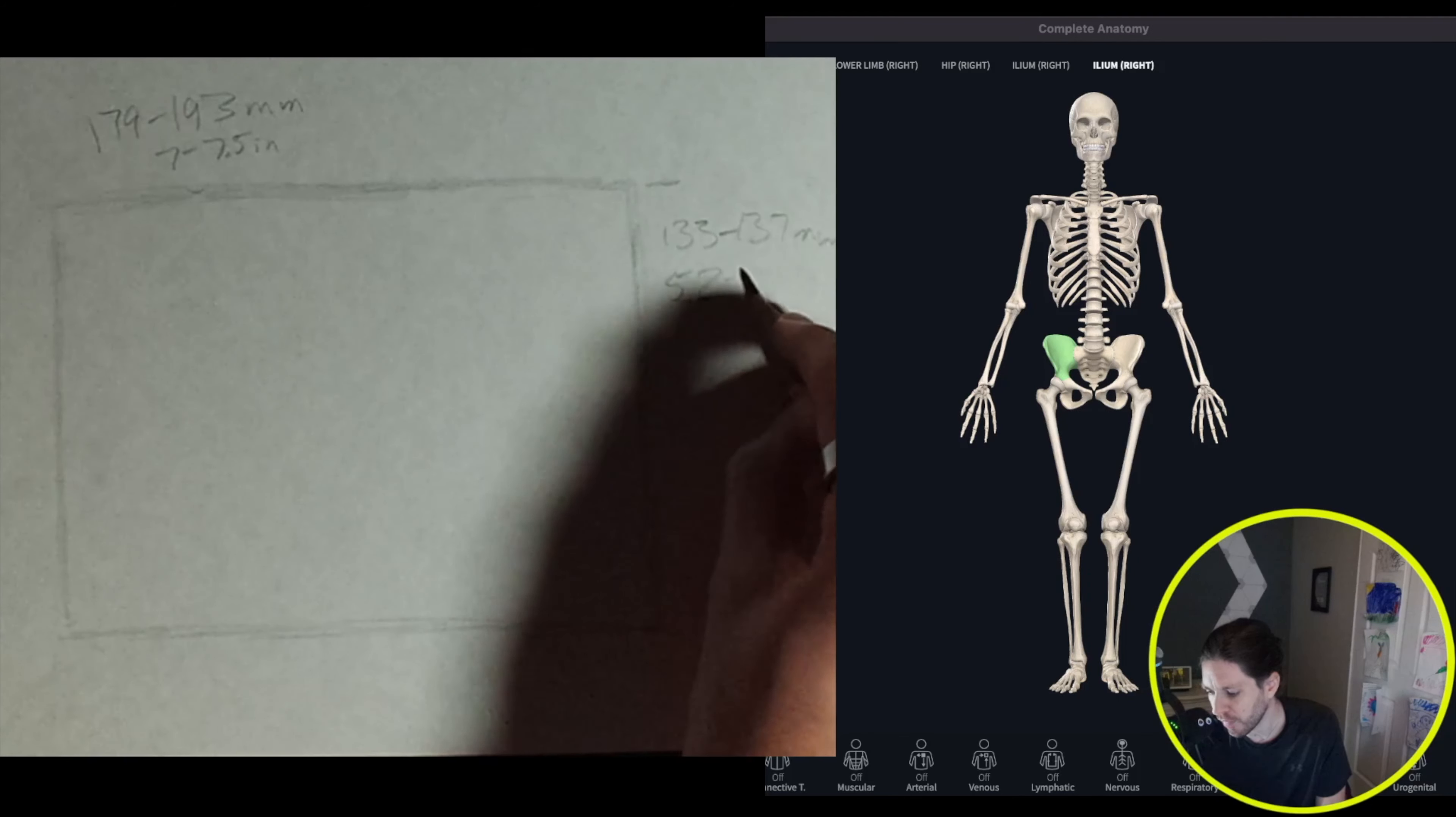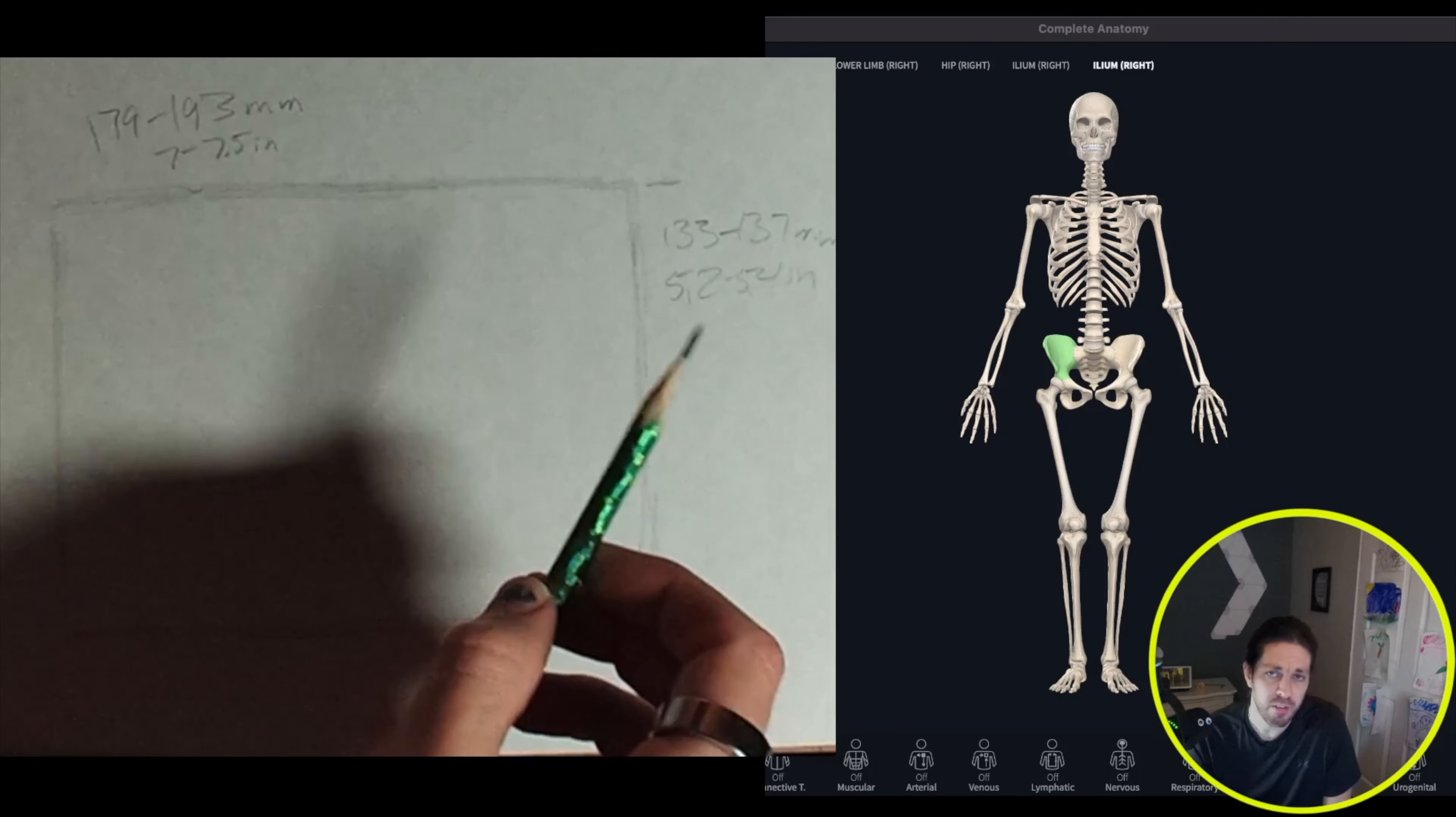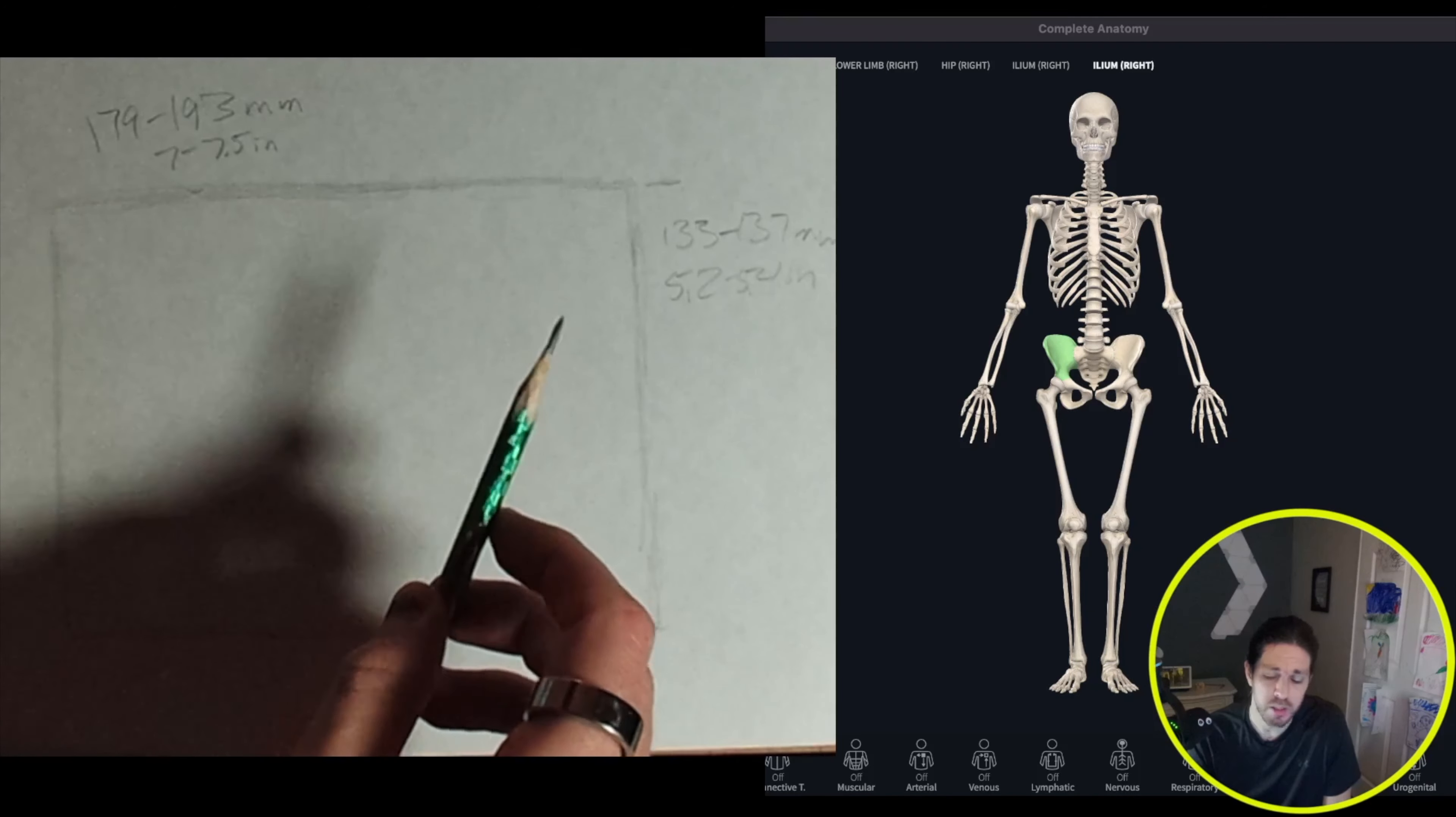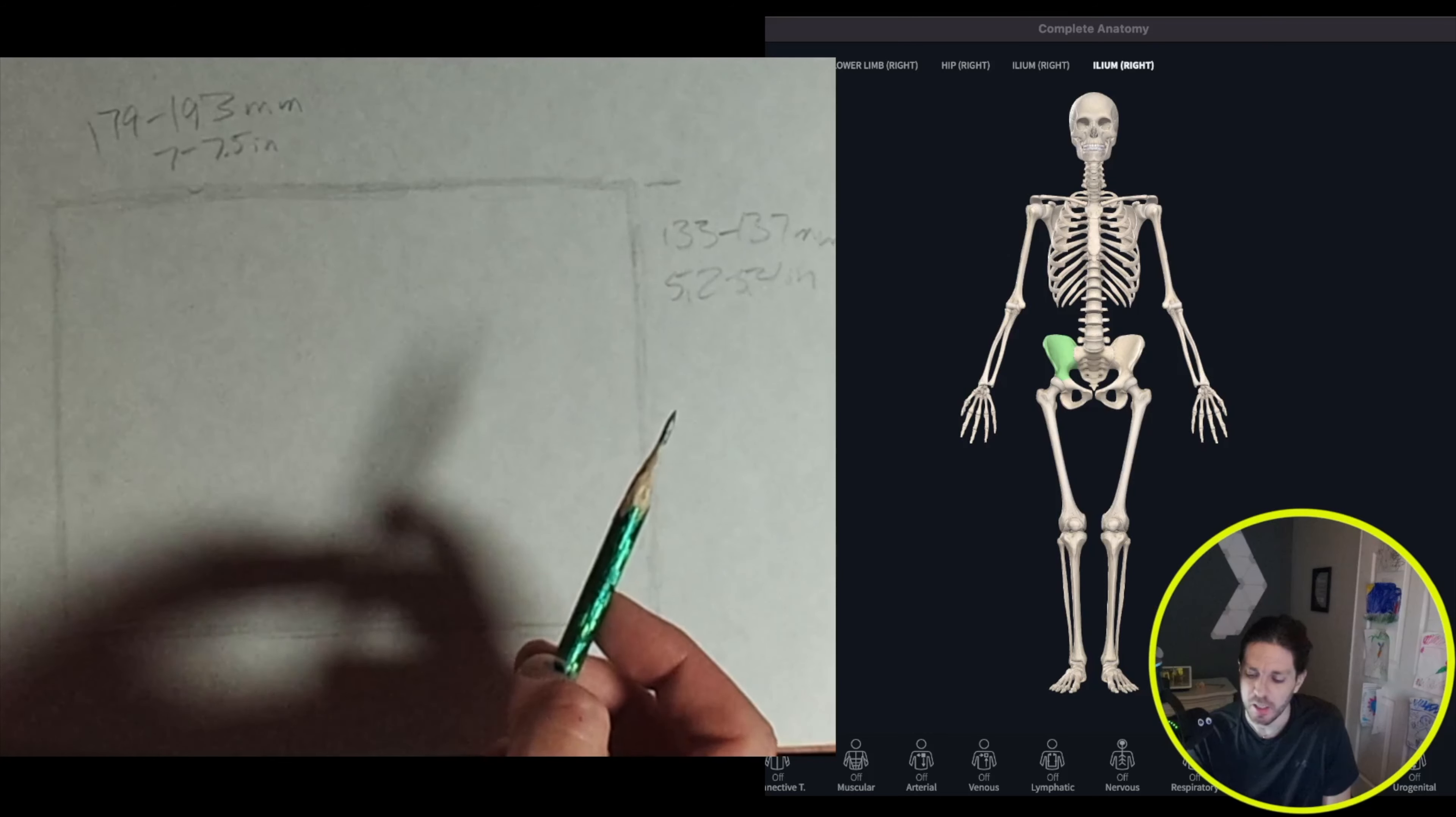So there's no real easy way to draw the pelvis because it has such dynamic movement in the hips. Your hip joint has to move in 360 degrees, so you have to have muscles attached in all directions. So I'm going to try to break this down into shapes, and there are seven bones or four unique bones in the pelvis.